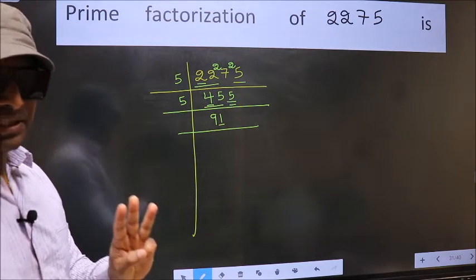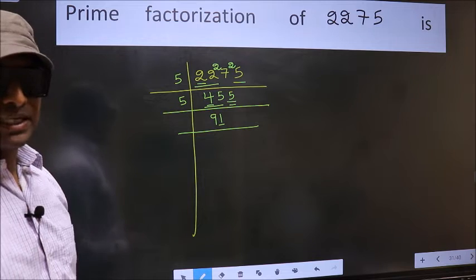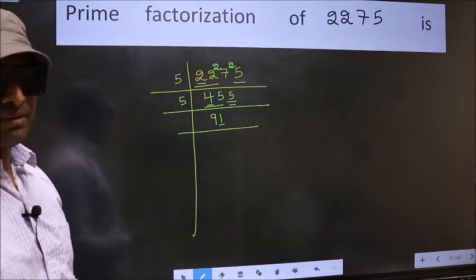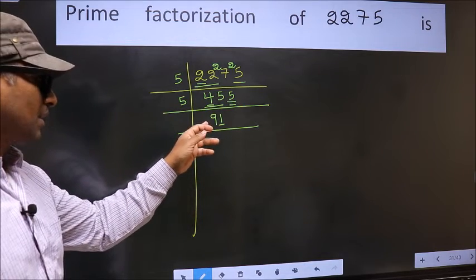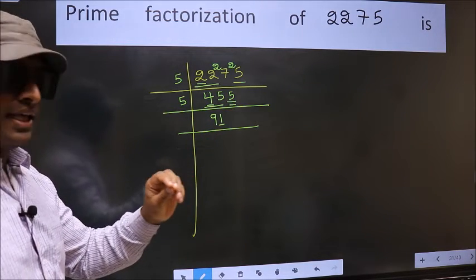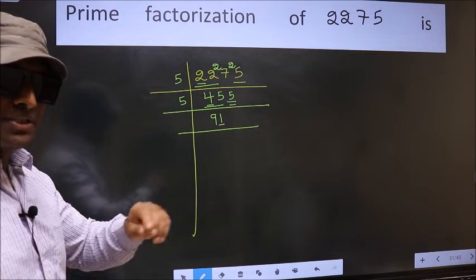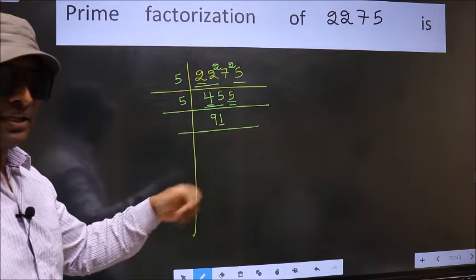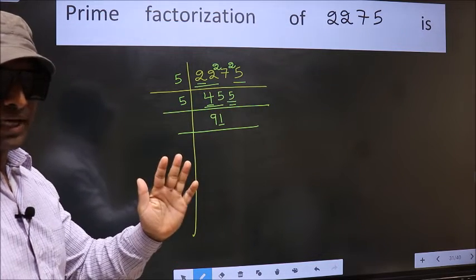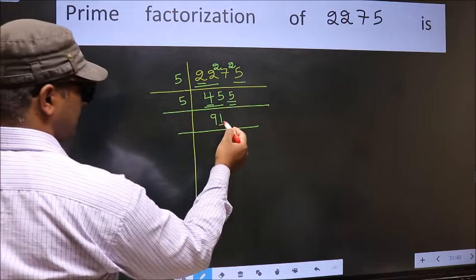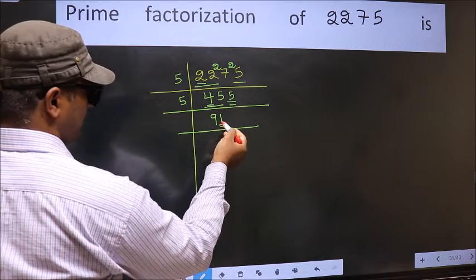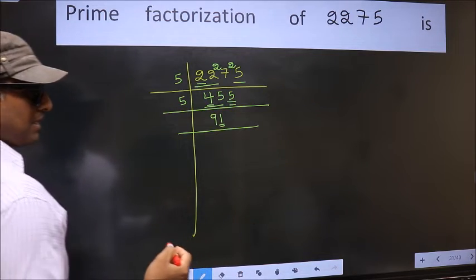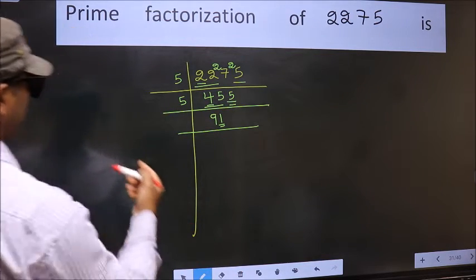Next prime number 3. To check divisibility by 3, we should add the digits. What I mean is 9 plus 1 equals 10, and 10 is not divisible by 3, so this number is also not divisible by 3. Next prime number 5. The last digit is neither 0 nor 5, so this is not divisible by 5.